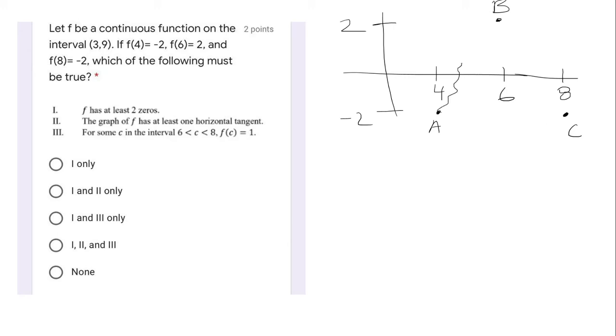So if I connect it, I don't really care how I connect it, but at some point, I'm going to have to cross the x-axis over here. And then at some point, I'm going to have to cross the x-axis over here. So by the intermediate value theorem, there are two zeros. So this is correct.